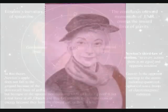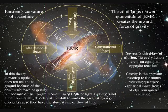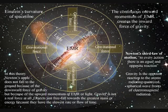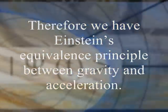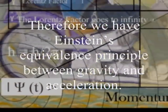In this theory, gravity is a secondary force to the electromagnetic force. Objects just freefall towards the greatest mass or energy because it has the slowest rate that time flows.